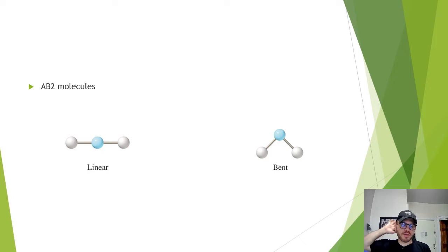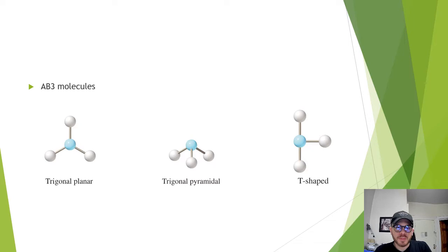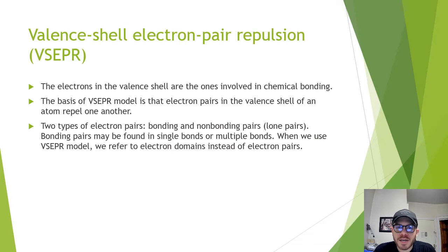Having the molecular formula alone is insufficient to predict the shape of a molecule. For example, AB2 molecules can be either linear or bent, as we can see in the picture here. Moreover, AB3 molecules can be planar, trigonal planar, trigonal pyramidal, or T-shaped molecules. To determine a shape, we must start with a correct Lewis structure and apply the VSEPR model.